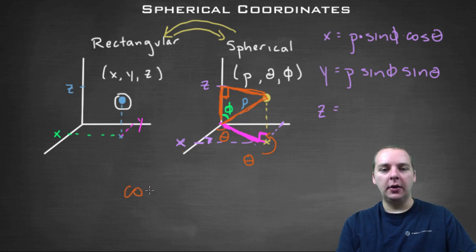So you'd have cosine of phi equals z over rho, adjacent over hypotenuse. Solve for the z. So z would be rho cosine of phi.